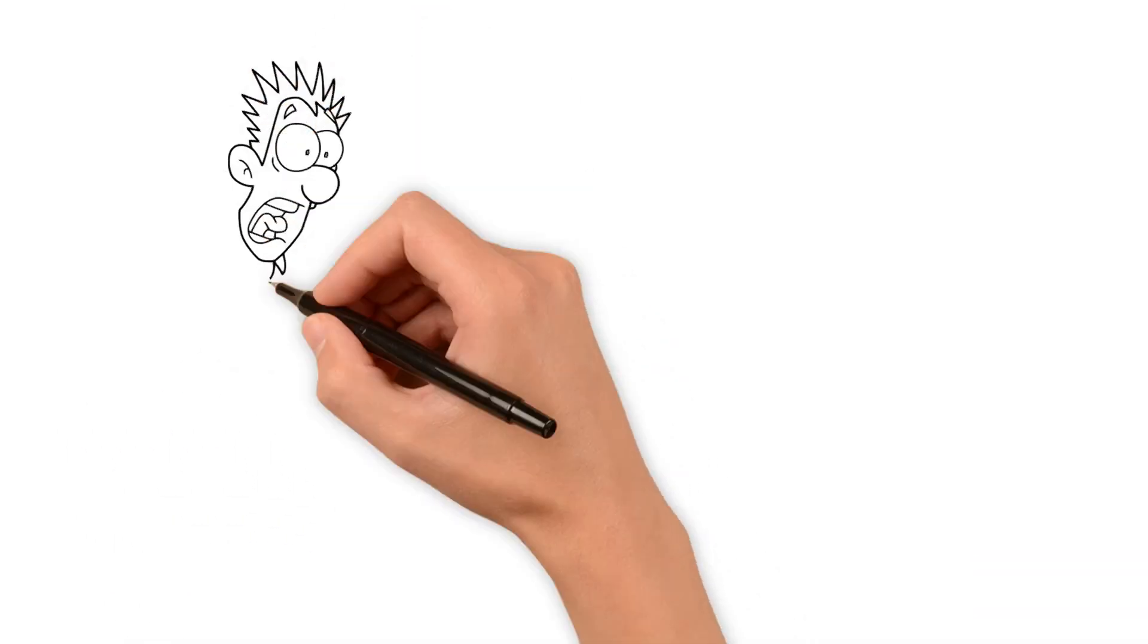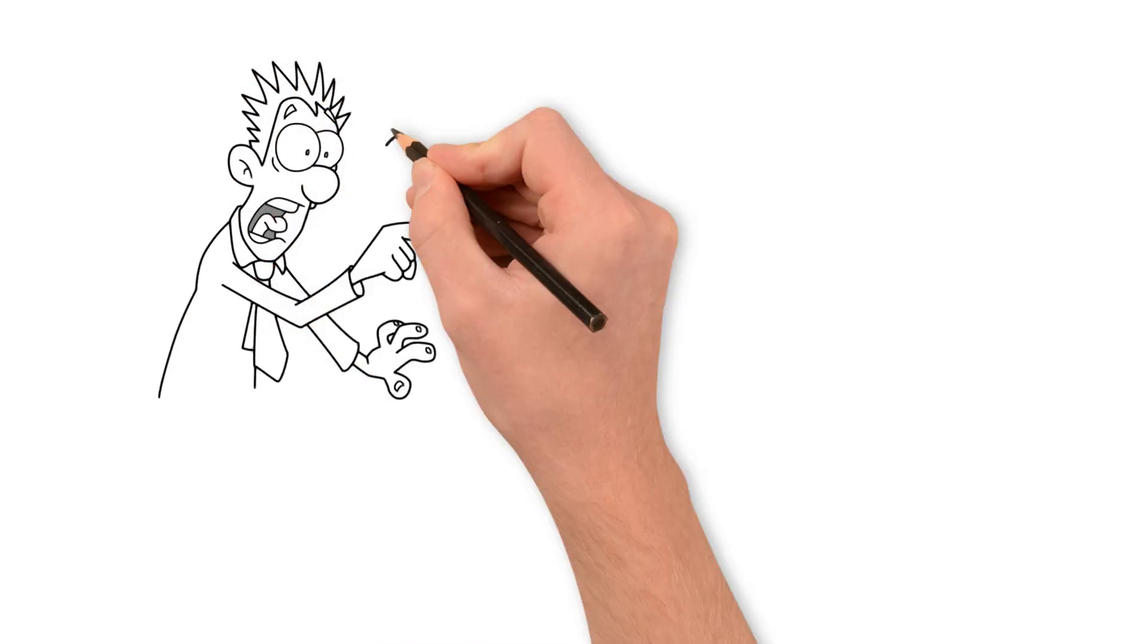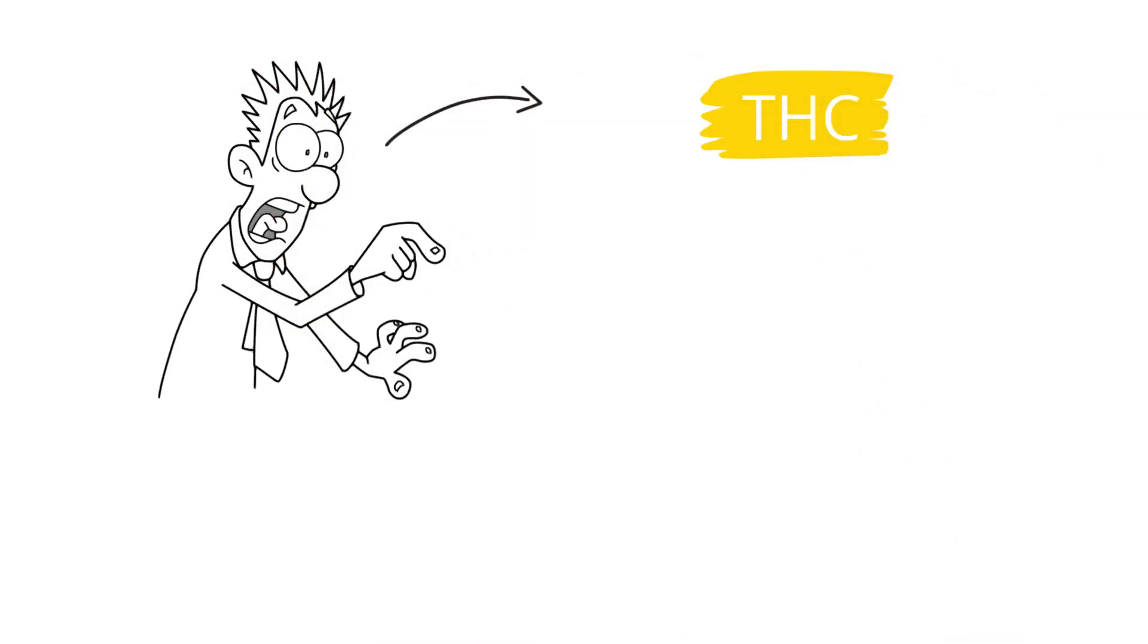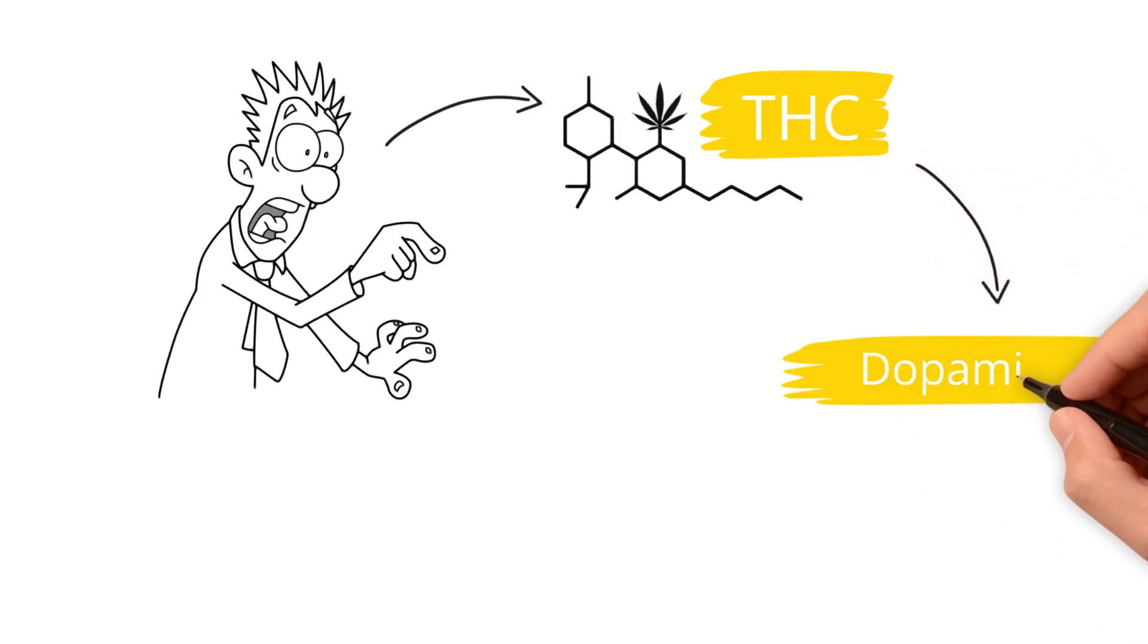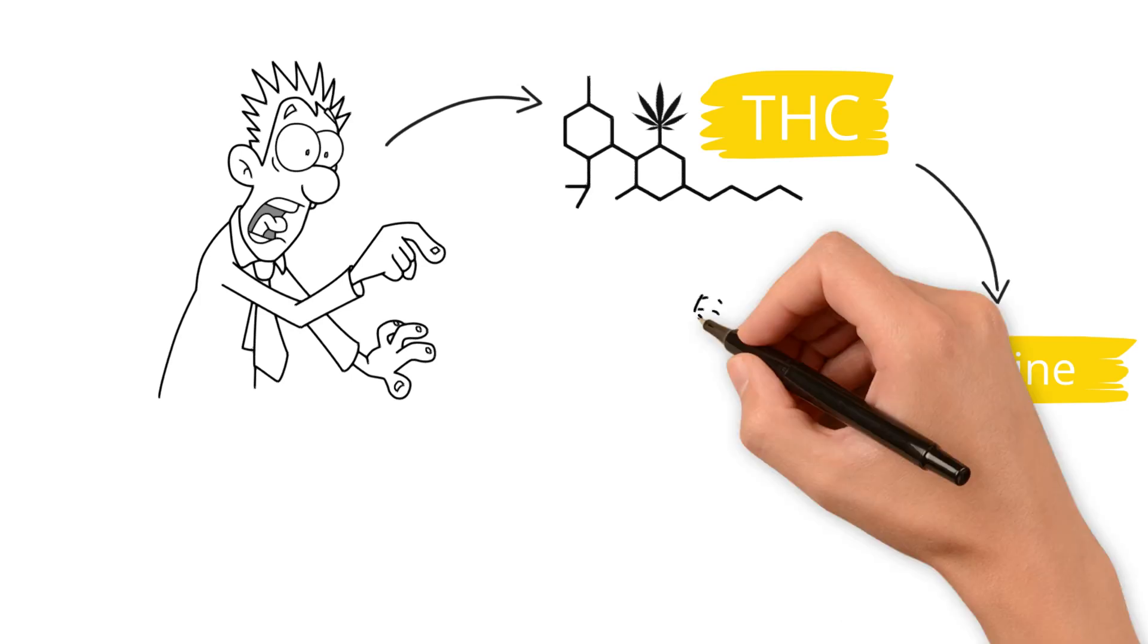But how does weed even mess with your mind? The culprit is THC, the main psychoactive ingredient. It floods your brain with dopamine, the feel-good chemical, creating that happy high.